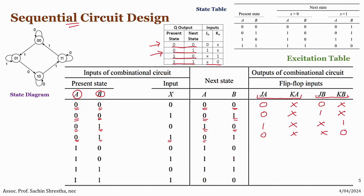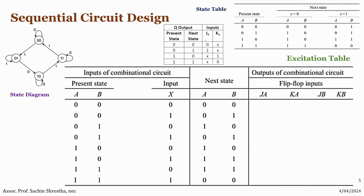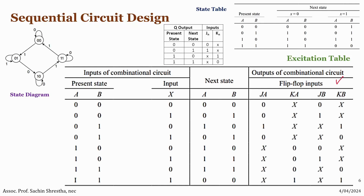That's why it is a lot easier to fill up the excitation table if we have the JK flip-flop excitation table beforehand. Now based on this excitation table, we need to define the inputs for JA, KA, JB, and KB.